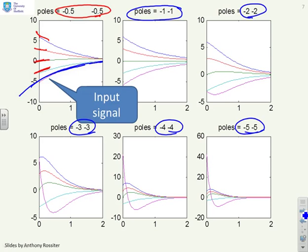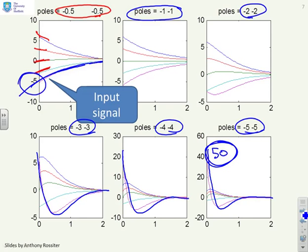The key thing to look at is not only the convergence rates, which will clearly change as you speed up the poles, but also the corresponding inputs. Look at this value here, it starts at around 50, and compare that to the value we had here, which was around 5. So nothing is for free. I've speeded up the system, but at the cost of a very aggressive input.